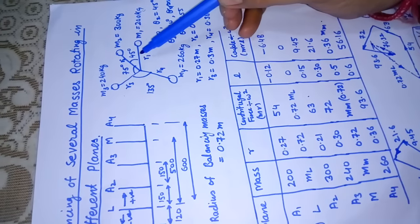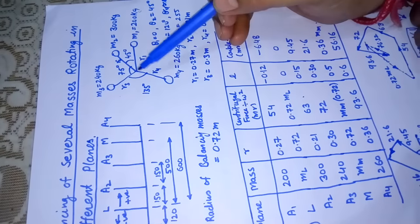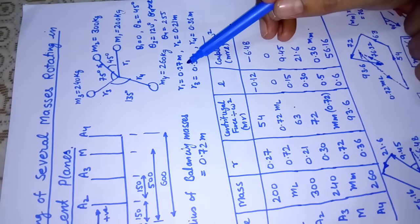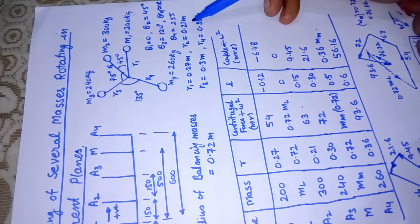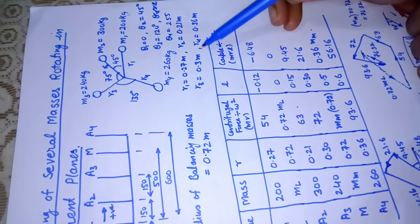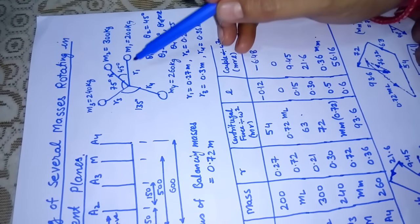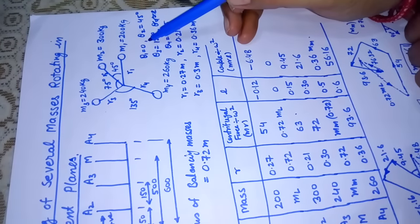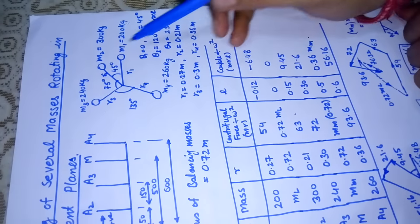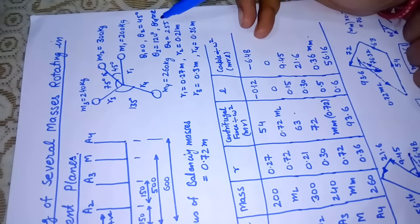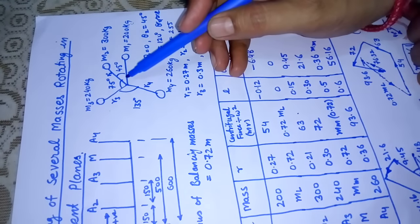The radial distances r1, r2, r3, r4 are given here: r1 is 0.27, r2 is 0.21, r3 is 0.3, r4 is 0.36. Thetas are also given. m1 is taken as theta equal to 0, m2 is at theta 2 equal to 45, theta 3 is 120, and theta 4 is 255 if measured with respect to x-axis.